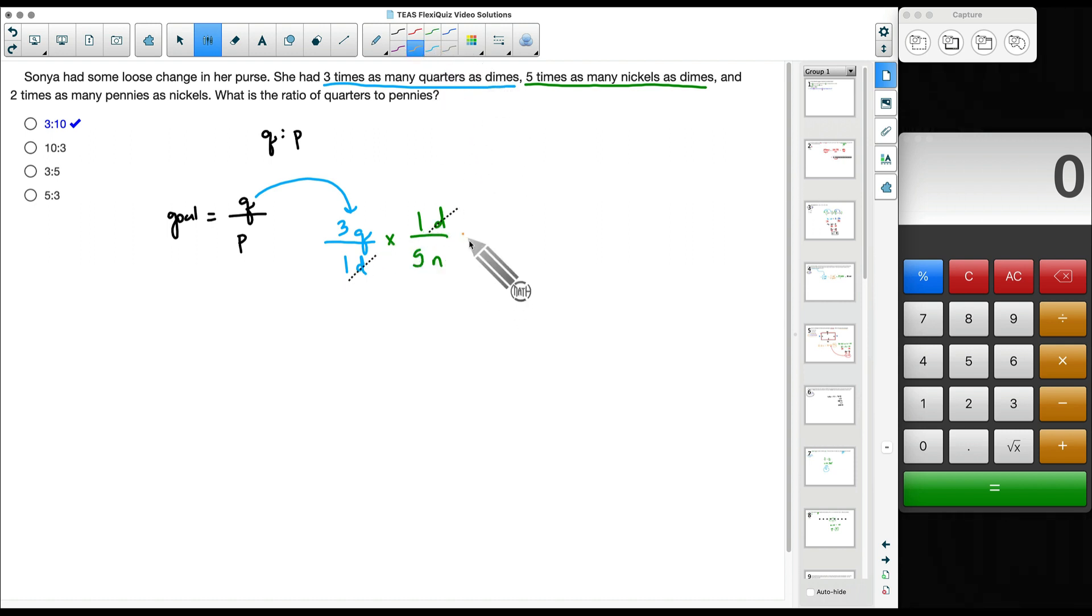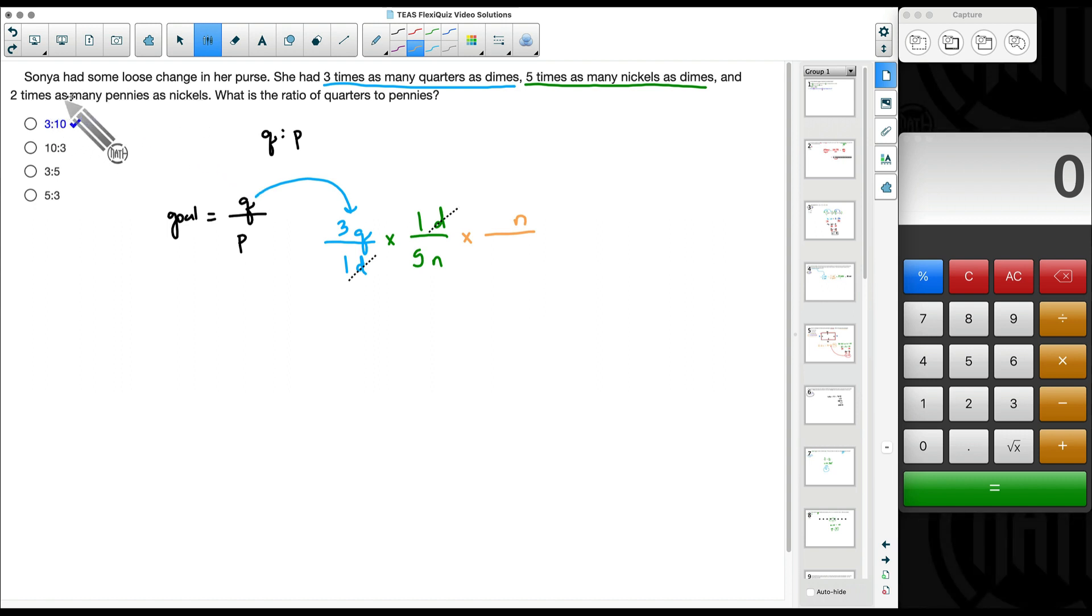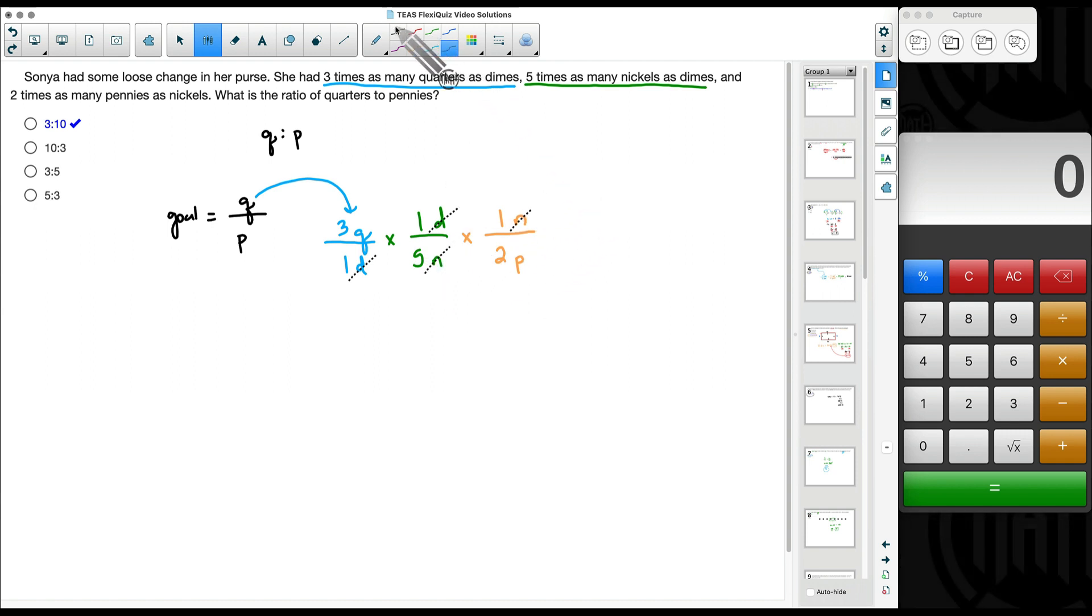And now let's get rid of nickels. What do we know about nickels? Two times as many pennies as nickels. So she has more pennies. Two times as many pennies as nickels. So for every one nickel, she has twice as many pennies. Look at what we can get rid of. The nickels cancel out.